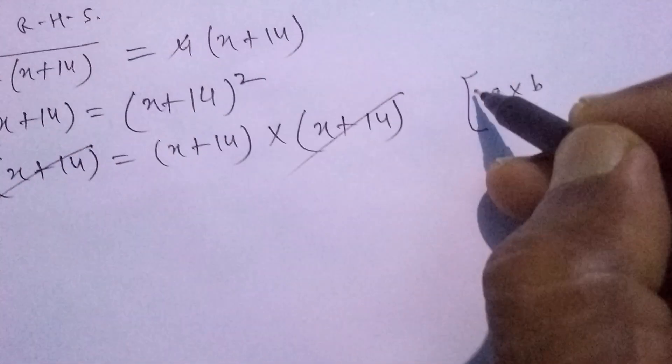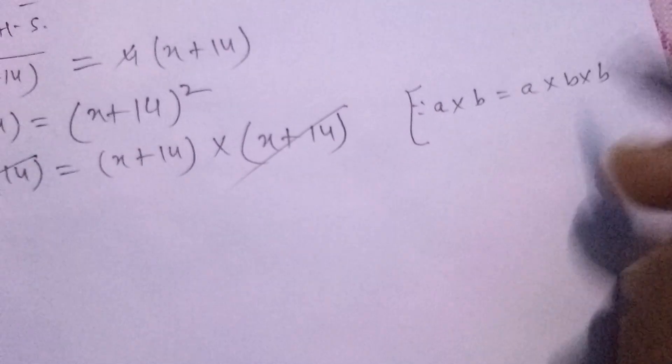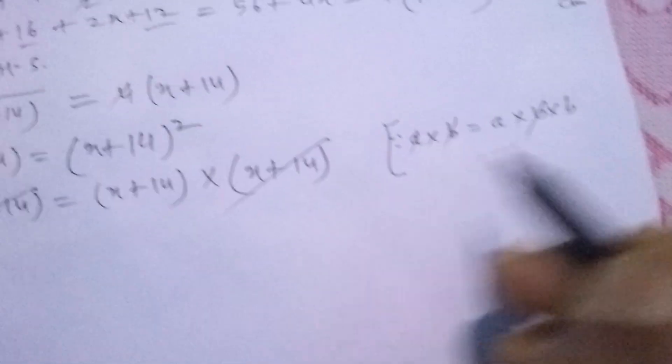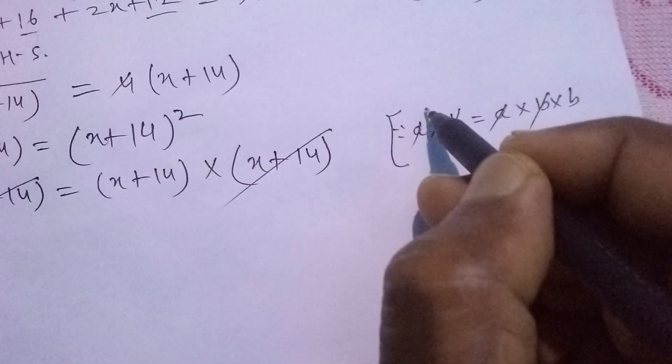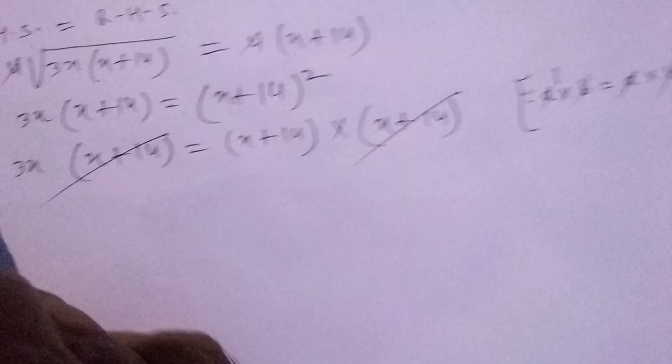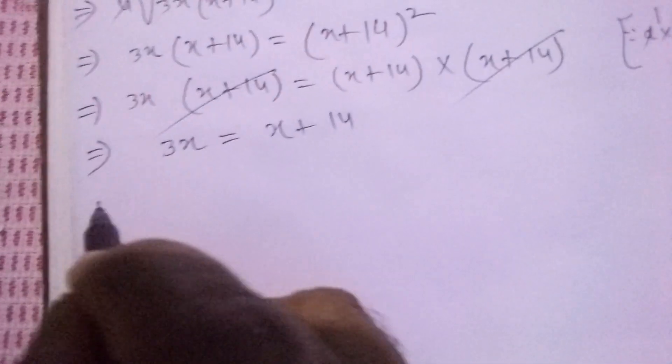Since this is in the form A·B equals A·B·B, we can cancel one A and one B from each side. After canceling (X+14), we're left with 3X equals X+14.